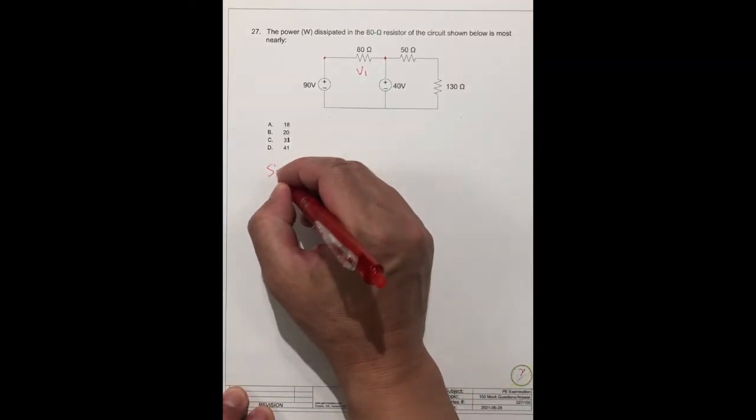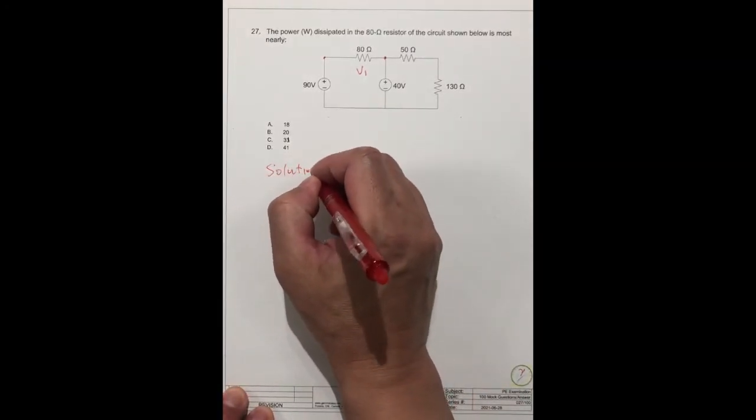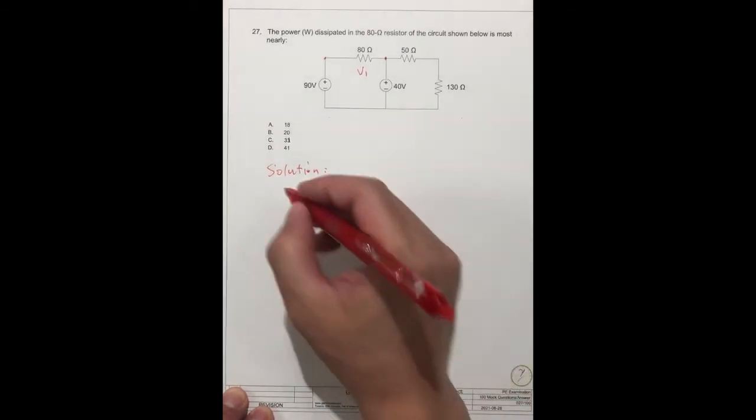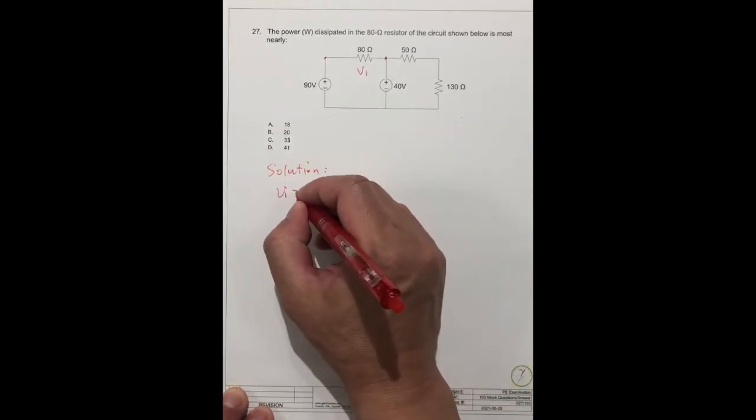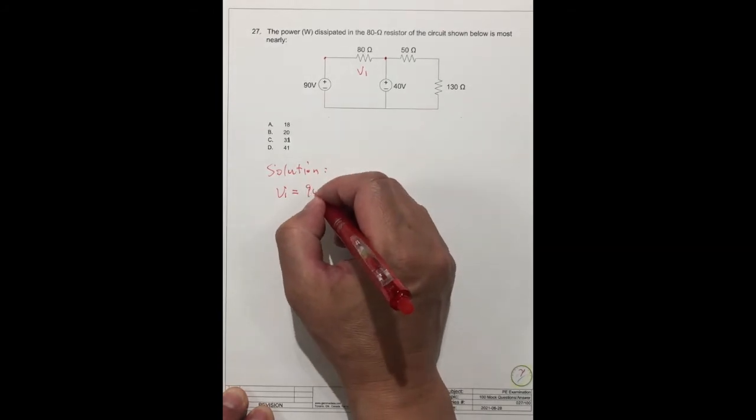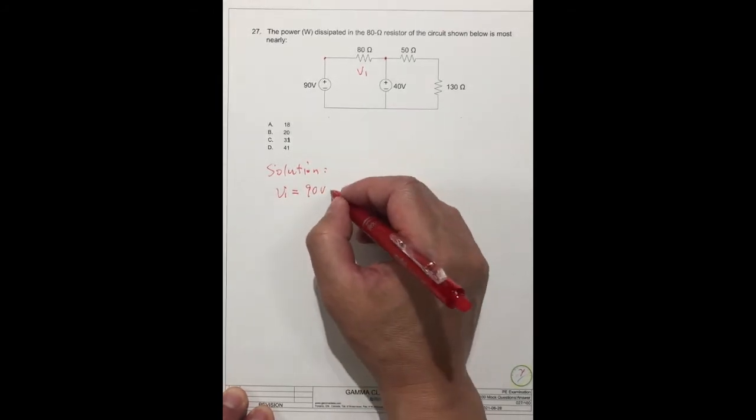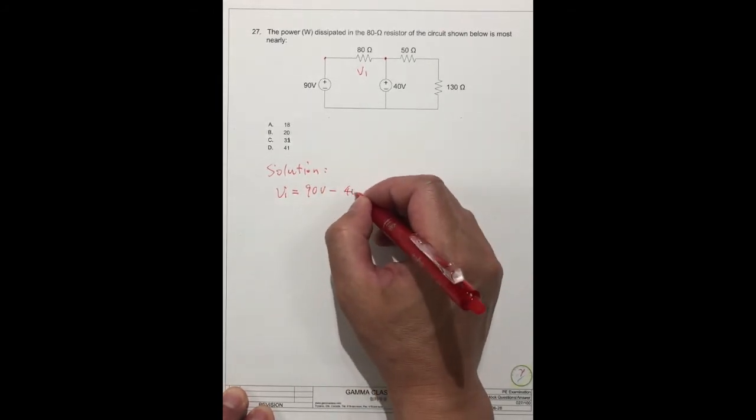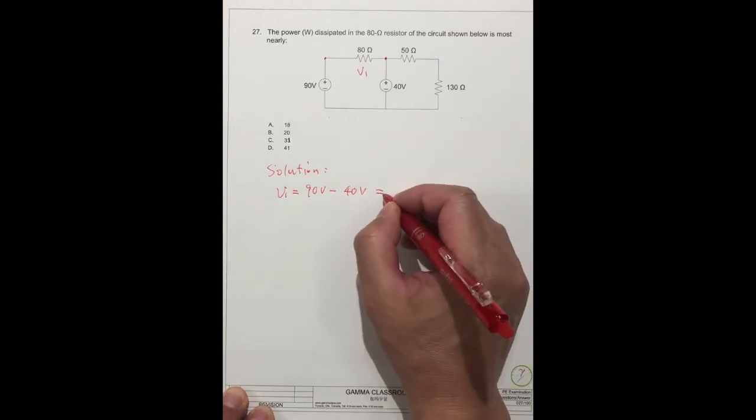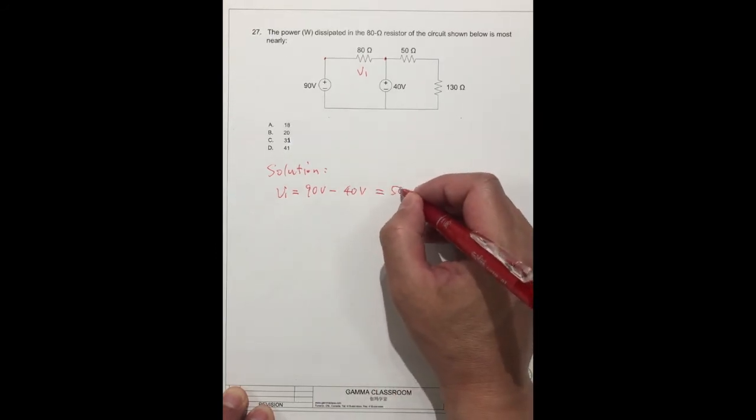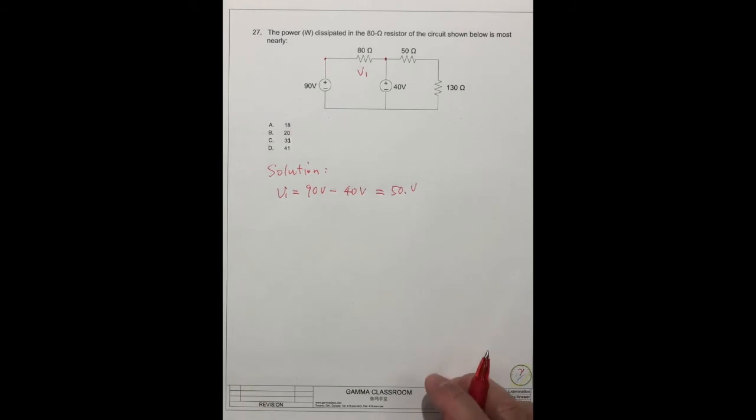The solution. V1 equals 90 volts minus 40, so we get 50 volts.